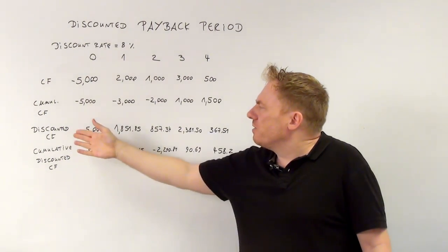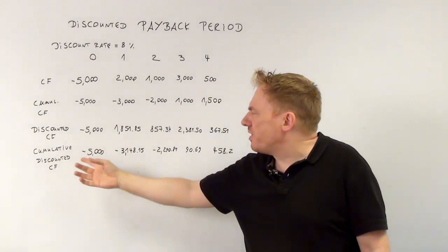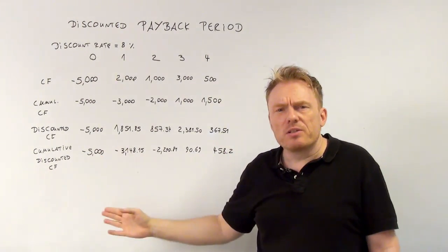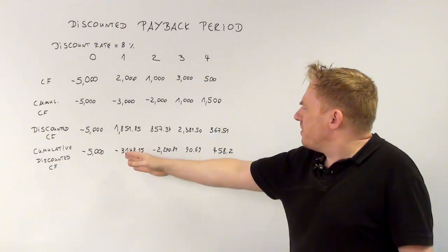So now, if you sum up the discounted cash flows, you get the cumulative discounted cash flows. And taking a look at the cumulative discounted cash flows gives us that